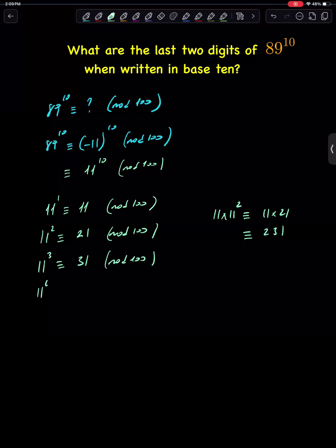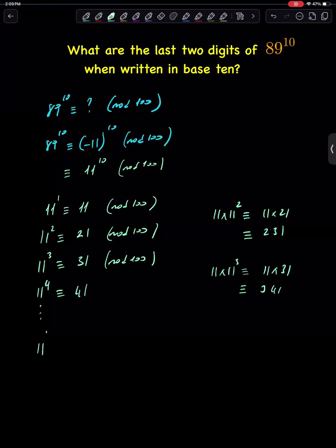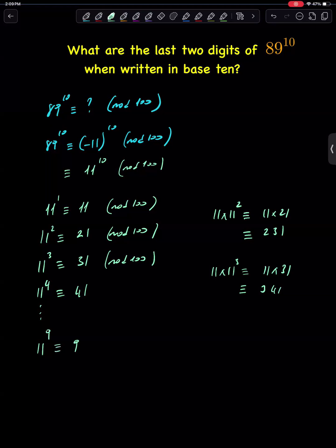11 to the fourth power is congruent to 11 times 11 cubed, which is 31. So it's congruent to 11 times 31, which is 341, which is congruent to 41. If we look at the pattern, we can say 11 to the power of 9 is congruent to 91, mod 100.